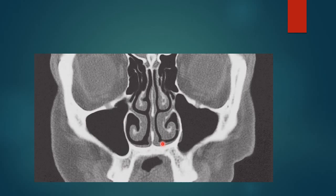This coronal CT image shows the nasal septum, inferior turbinate, middle turbinate, and the maxillary sinuses — right and left. As can be seen, the maxillary sinus appears pyramidal in shape, with its base formed by the lateral wall of the nose and its apex directed laterally into the zygomatic bone. The floor of the maxillary sinus is formed by the alveolar process of the maxilla, while its roof is formed by the inferior wall of the orbit.